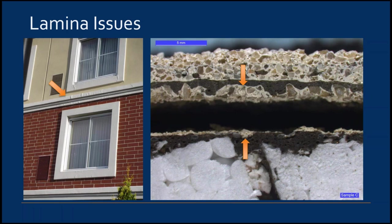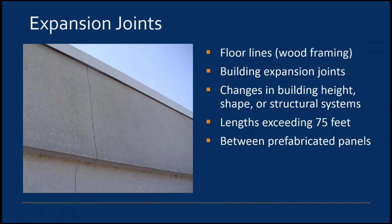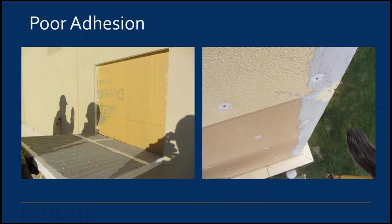Cracks can also develop if expansion joints are not provided to accommodate anticipated movement at floor lines — particularly for wood frame structures — building expansion joints, planar and height changes, lengths exceeding 75 feet, and between prefabricated EIFS panels. One project had an odd adhesion issue where the adhesive for the EPS boards was not developing bonds to the water-resistive barrier; testing indicated a contaminant was present causing delamination of large sections. The solution was to mechanically fasten the EIFS cladding.